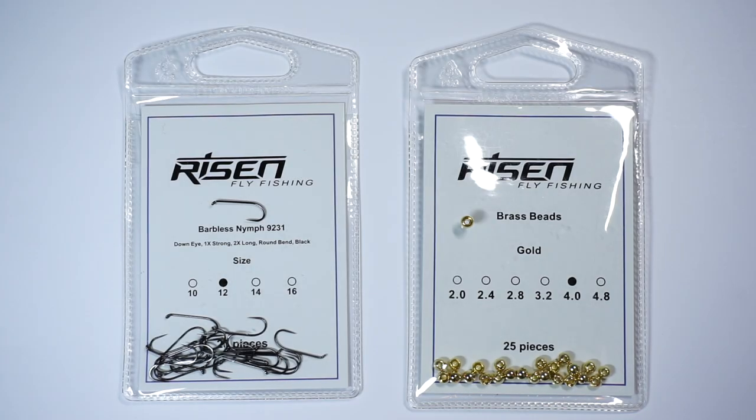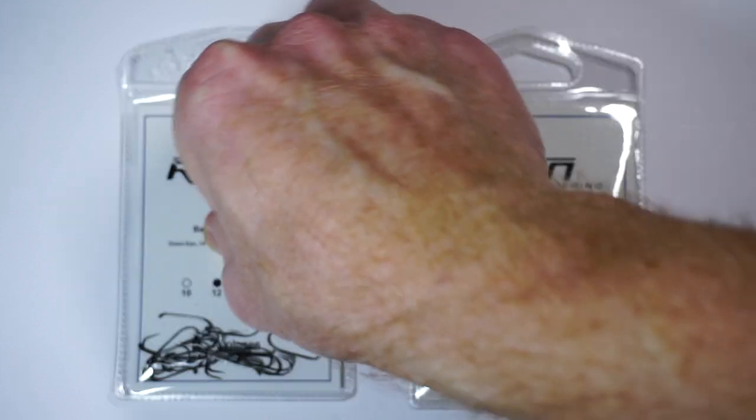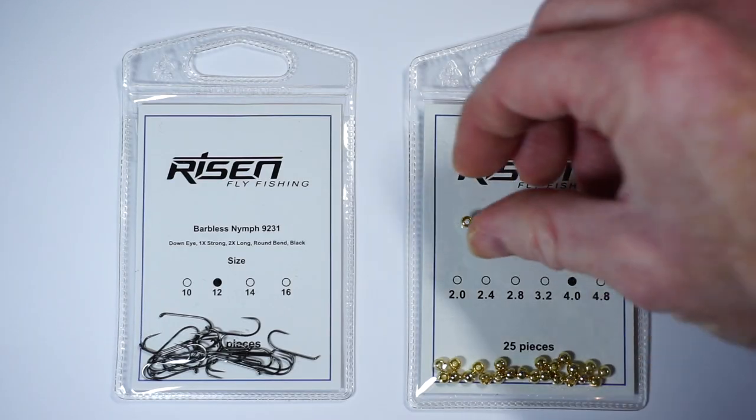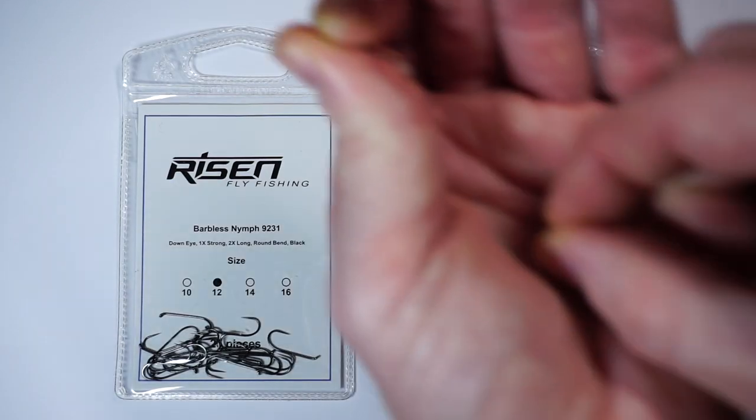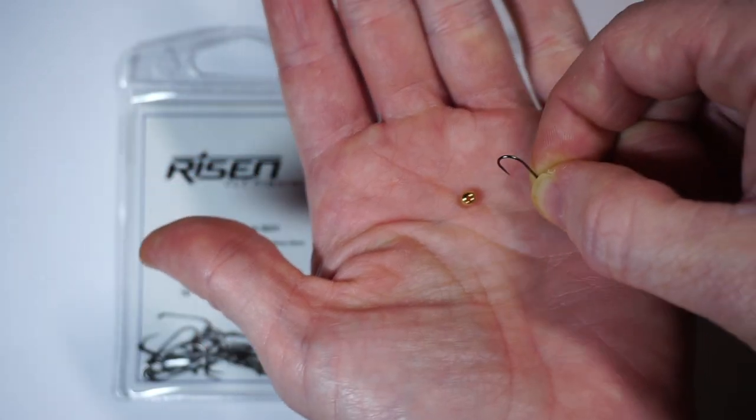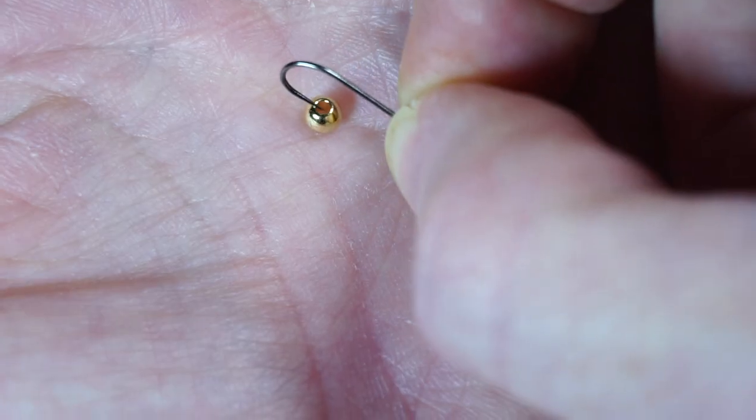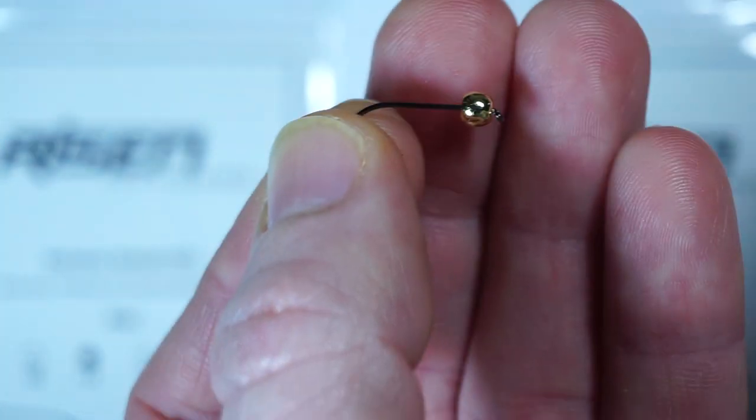To start you need to pair a brass or tungsten bead if you want to go heavier with a 2x long nymph hook. I'm using these gold brass beads and barbless nymph hooks from Risen. Now an easy way to put the bead on the hook is to place the bead in your hand and bring the hook to the bead. See how easy that was?